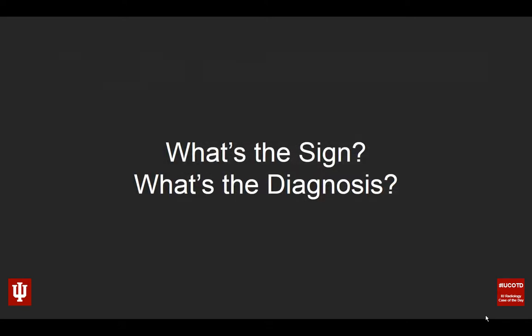I've got two questions for you. First of all, what's the imaging sign demonstrated in this case? Specifically, the imaging sign I'm looking for is on the coronal image. And then, what's the diagnosis? I'll throw out another one on the fly: is this conductive or sensorineural hearing loss? That's an important thing to consider based upon the imaging findings you see here.